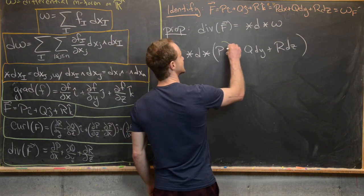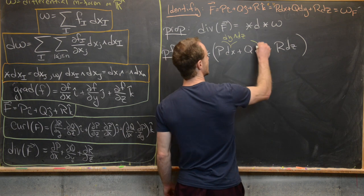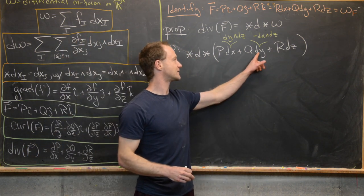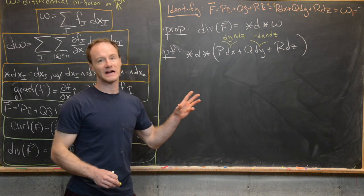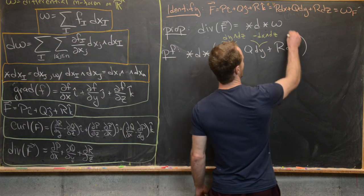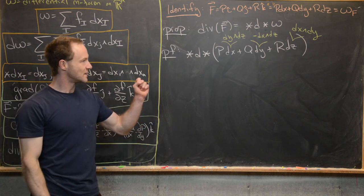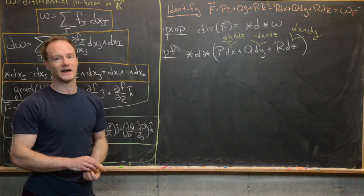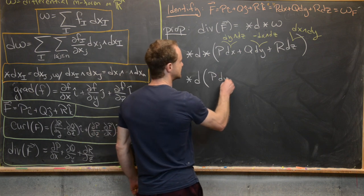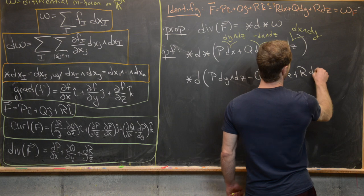Applying the first star: ★(dx) = dy ∧ dz. Then ★(dy) = −dx ∧ dz, because we need a minus sign when we wedge dy across dx (anti-commutativity). And ★(dz) = dx ∧ dy with no extra sign since dz commutes past two things, giving (−1)². So we have ★d applied to P dy ∧ dz − Q dx ∧ dz + R dx ∧ dy.